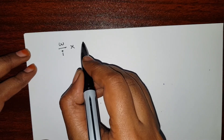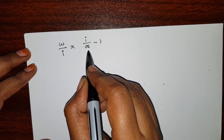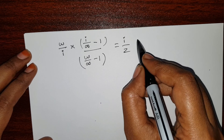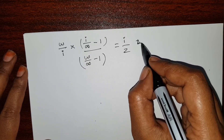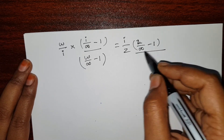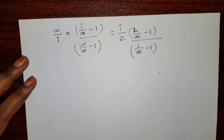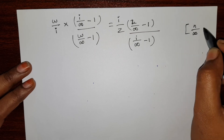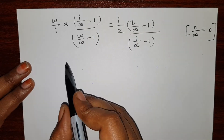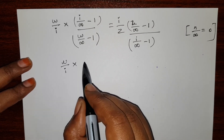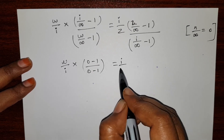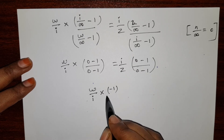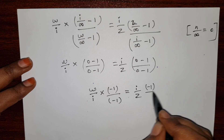As n tends to infinity, it becomes (i divided by infinity minus 1) divided by (w divided by infinity minus 1). On the other side, it becomes (i by z) times (z divided by infinity minus 1) divided by (i divided by infinity minus 1). This is the term after applying the limit as n tends to infinity. Then, anything divided by infinity equals 0. Applying this, it becomes (w by i) times (0 minus 1) divided by (0 minus 1), times (i by z) times (0 minus 1) divided by (0 minus 1).